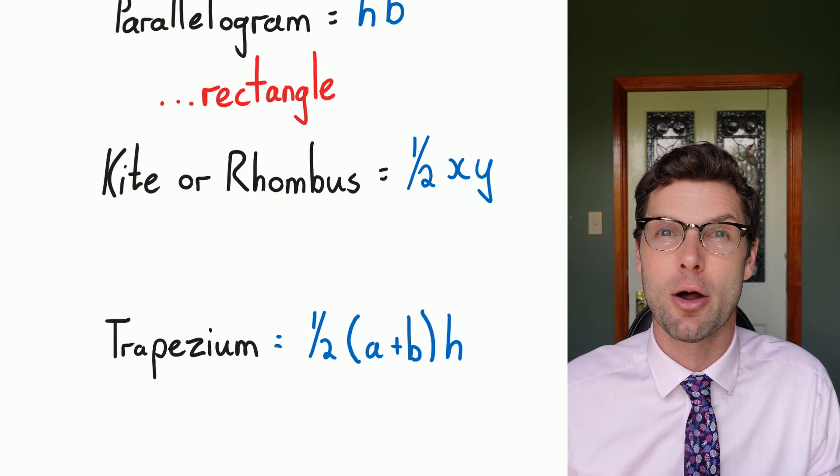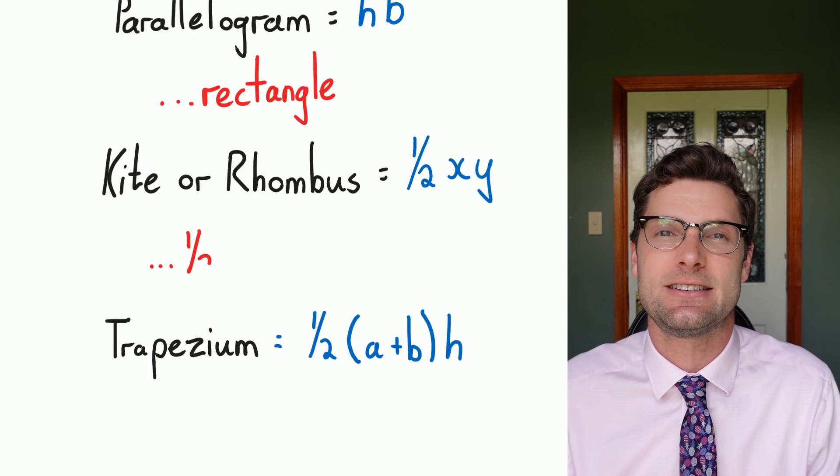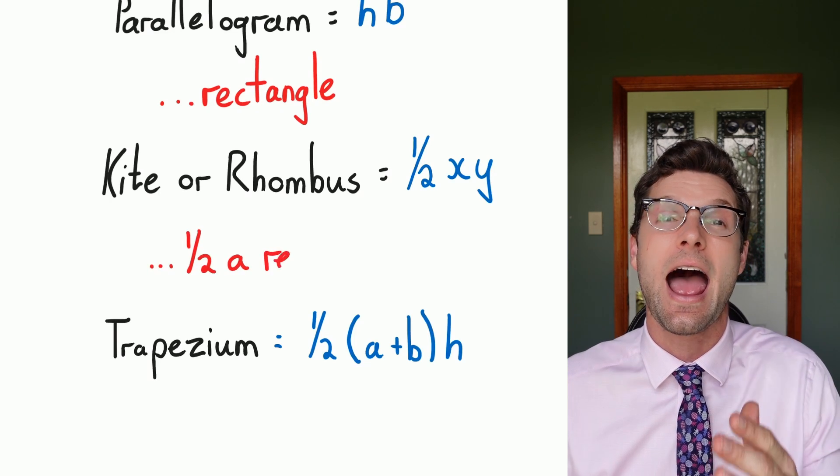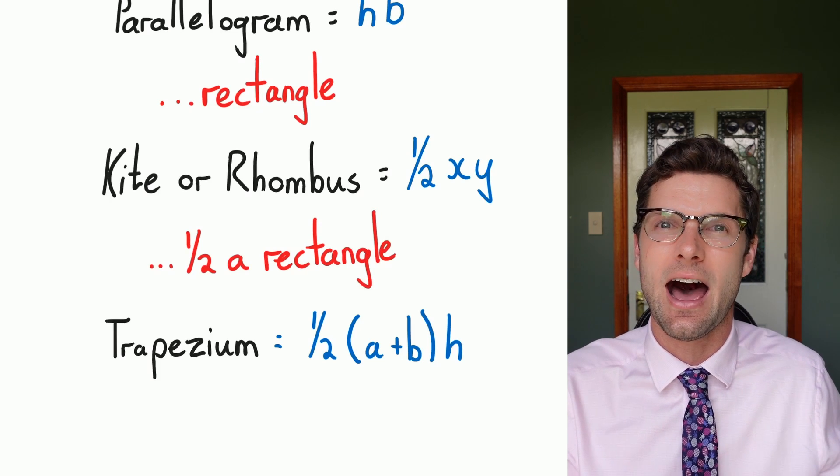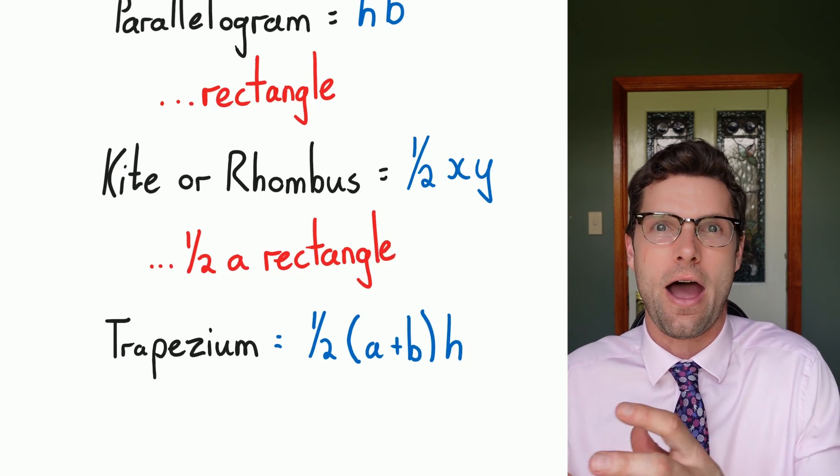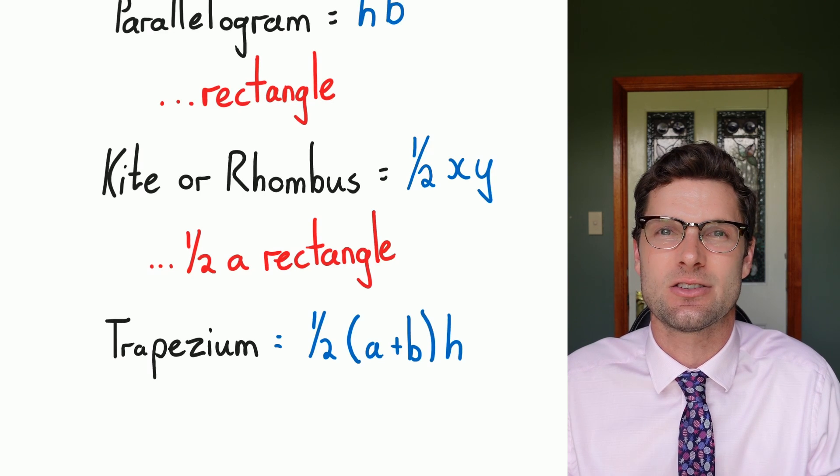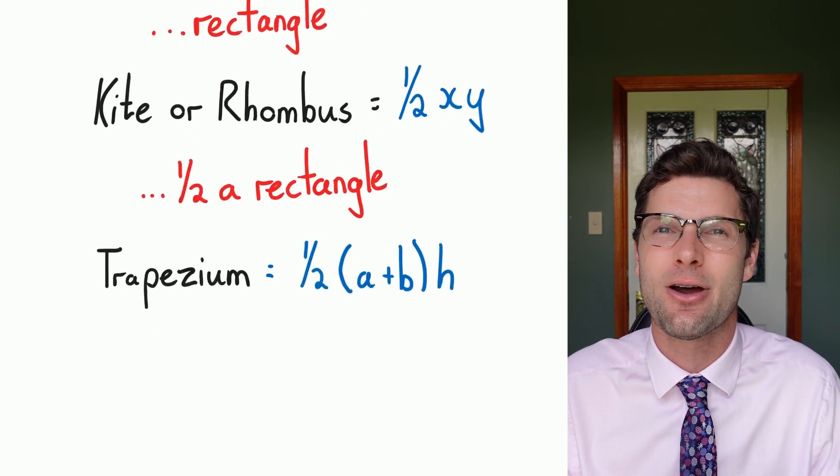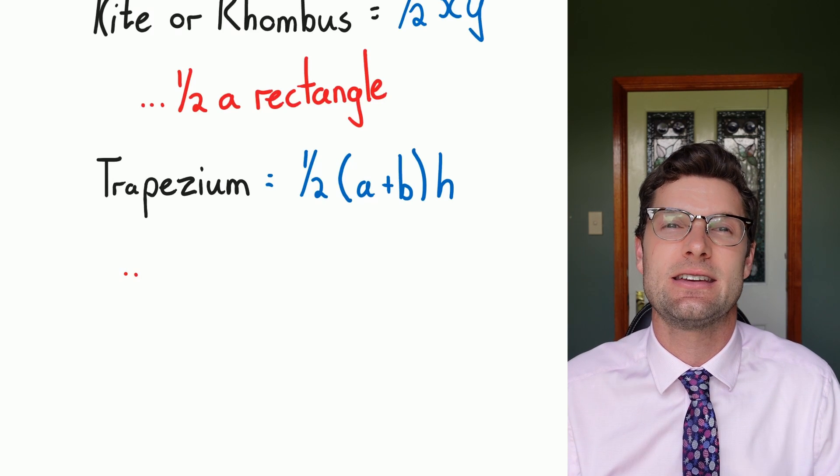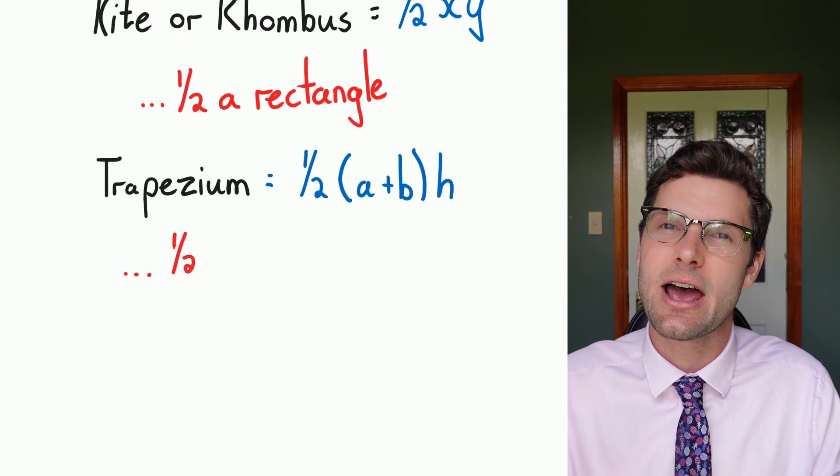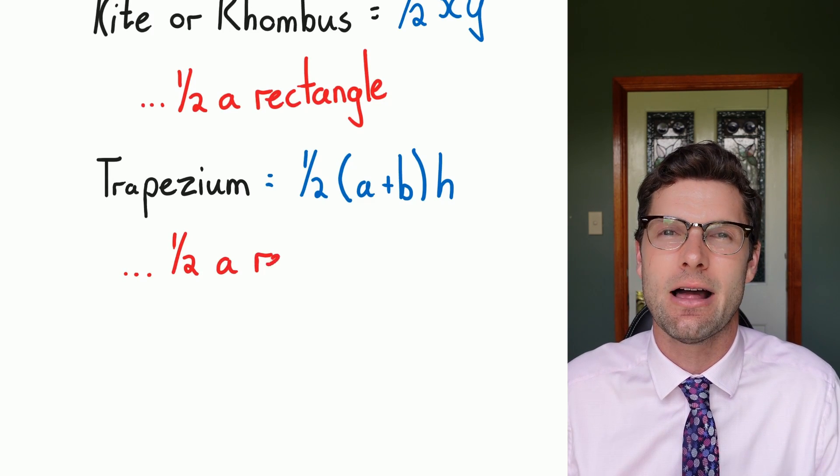The next one for the rhombus and the kite, we could see that it's just half of a rectangle, as long as we're using those diagonal lines. So that means the formula is a half, multiplied by the height and the base, which is just X and Y, half a rectangle, happy days. Finally, that trapezium, as long as we can see that if you double it and rotate it, we're just left with a parallelogram again.